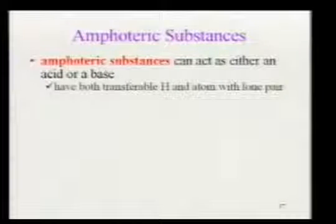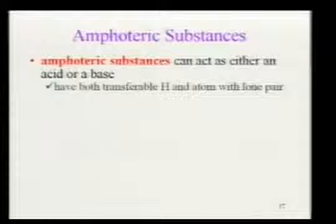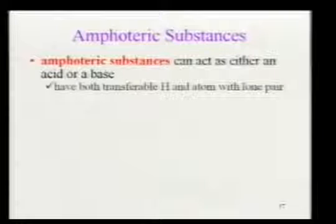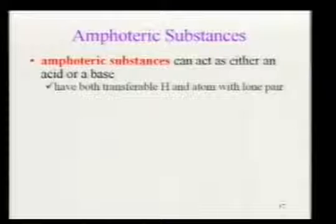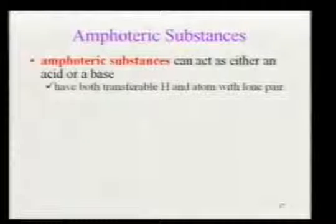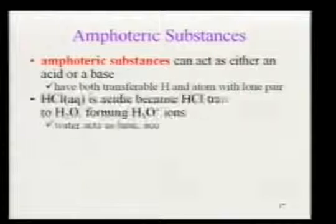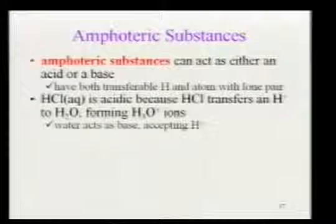Some things are amphoteric — they can act as either an acid or a base depending on the situation. The biggest example we'll deal with is water. Water has the ability to sometimes act as an acid — it can donate hydrogens — but it also has the ability to take in hydrogens. At a very small level, it can be amphoteric.